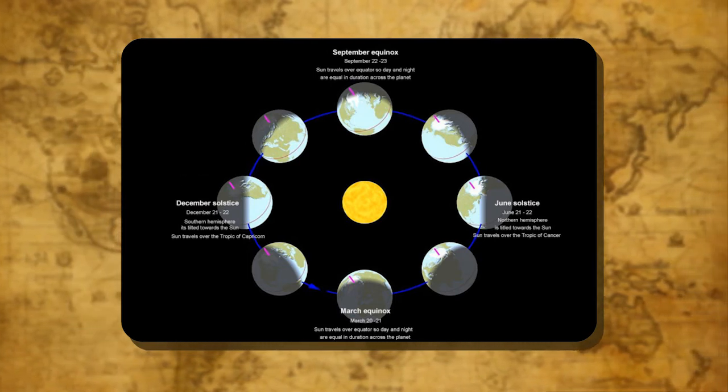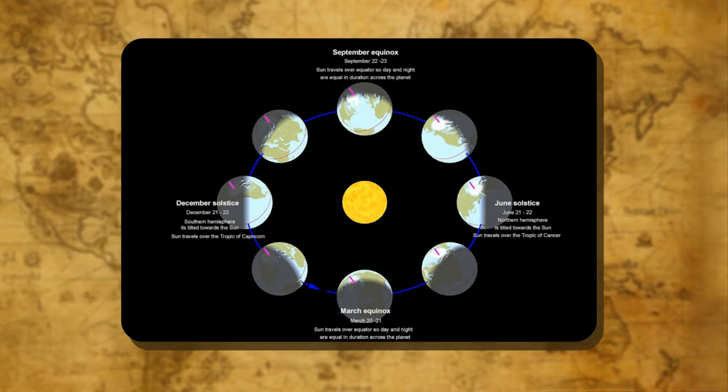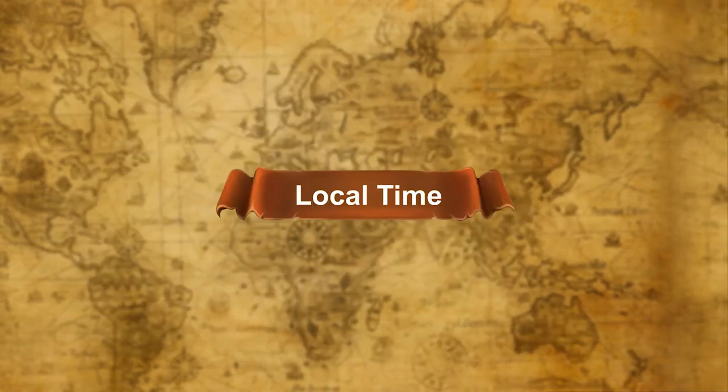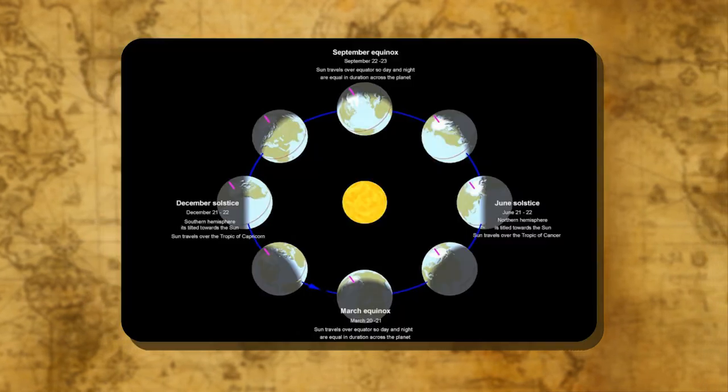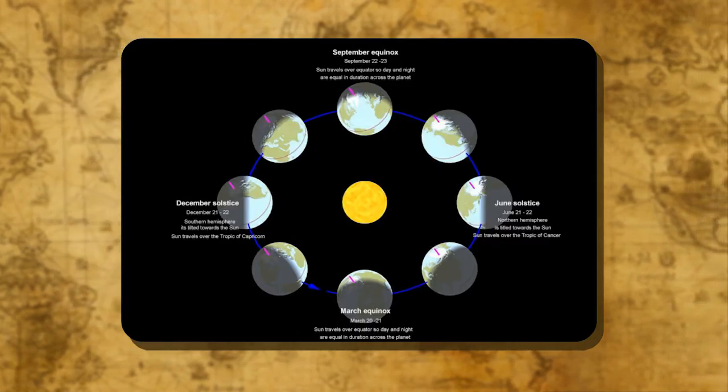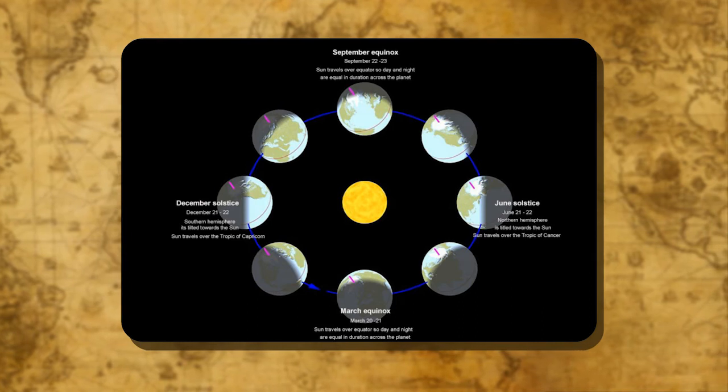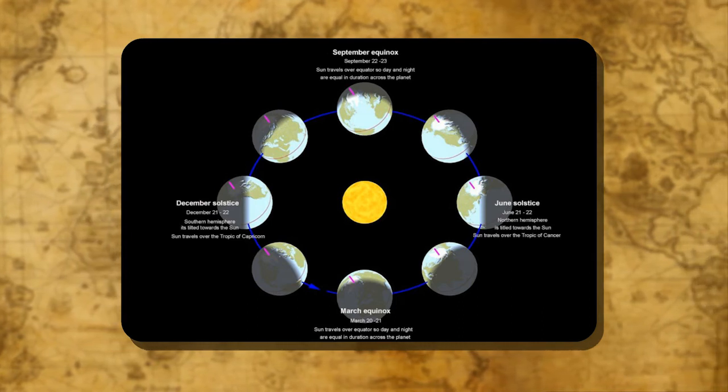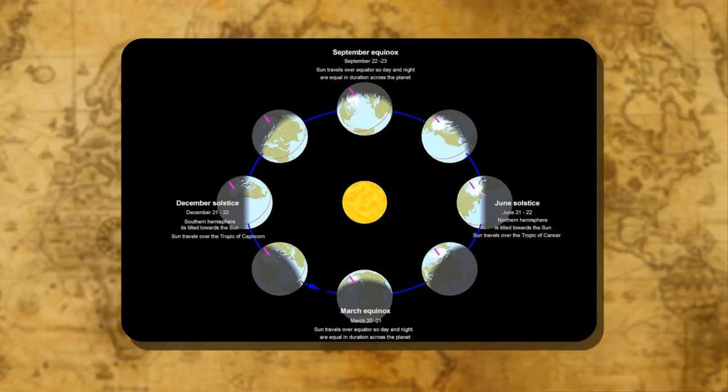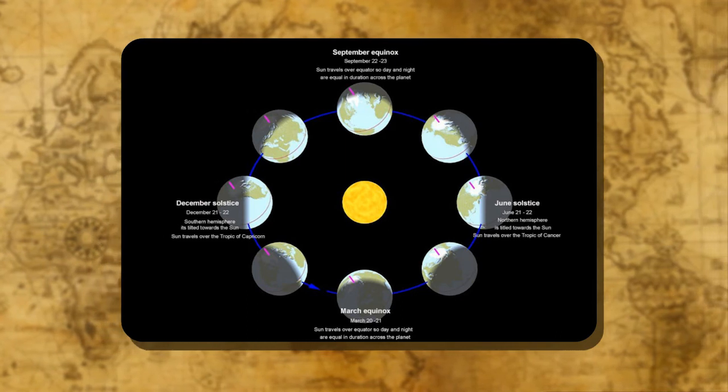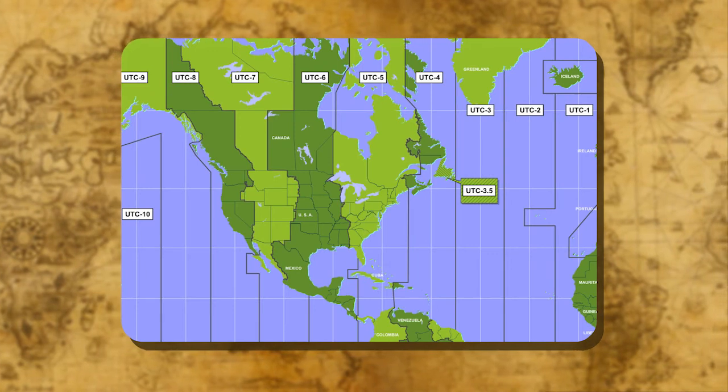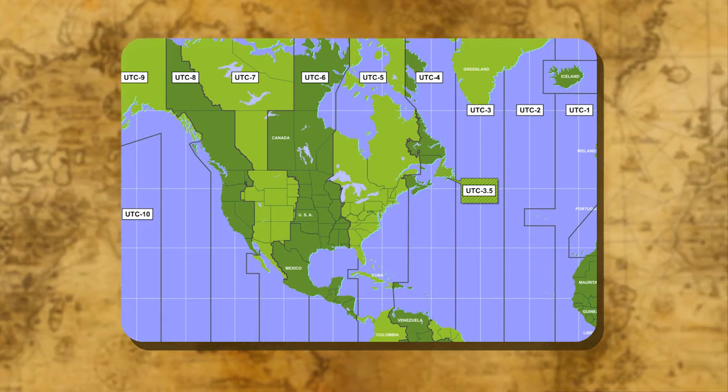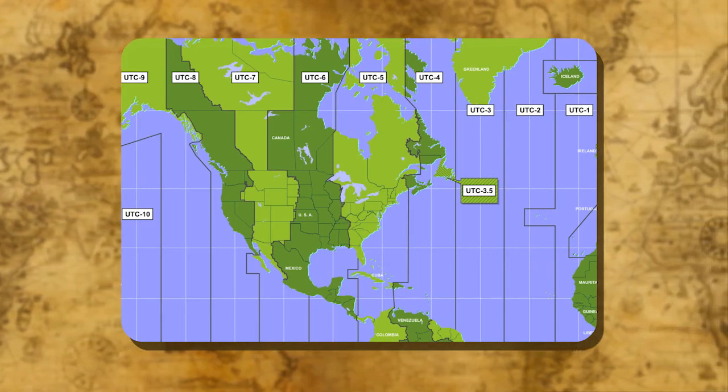Local time: The local time of any place is taken with reference to the time when the sun is right overhead or crossing the meridian, but the sun cannot be overhead at two meridians at one time. We do not follow local time because it would be very inconvenient when travelling from one place to another in an east-west or west-east direction.